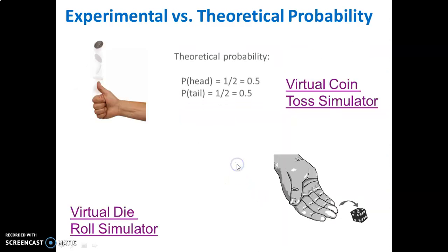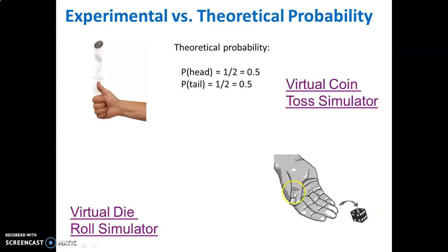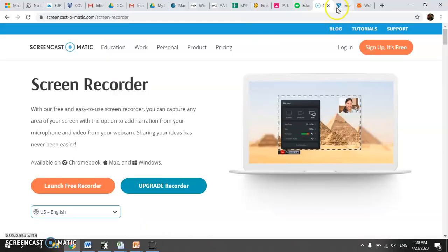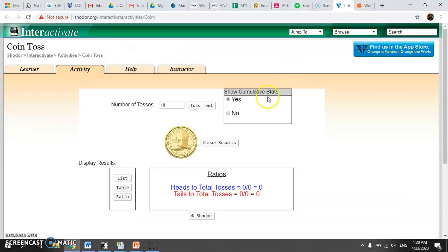Let's check that now with the coin toss and the die roll. In theory, the theoretical probability when you toss a coin is 50% heads, 50% tails. Let's look at this by running a virtual experiment. Here is a virtual coin tosser. I'm going to toss the coin ten times and see what results I get.